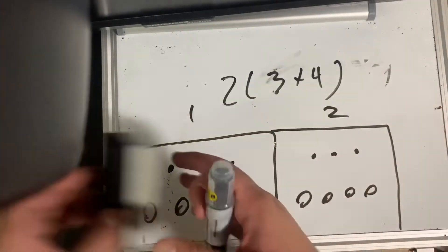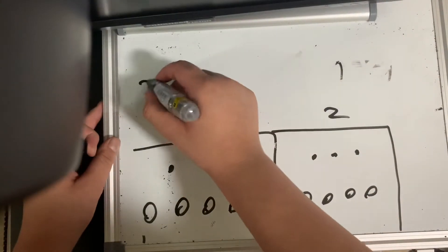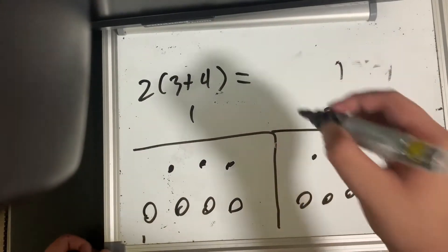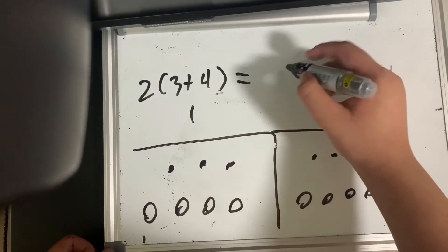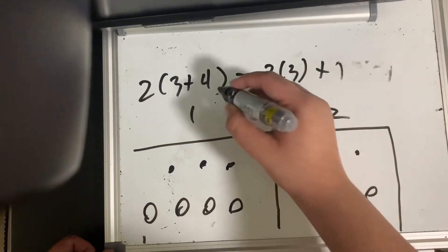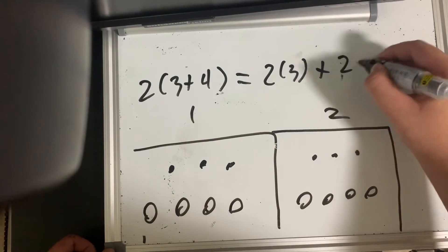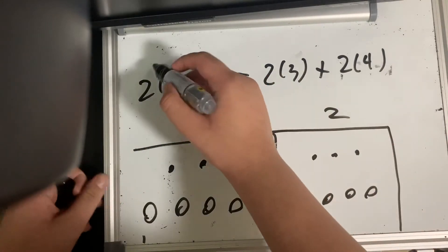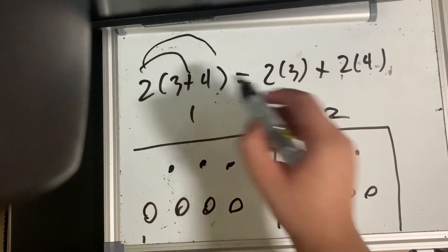So, we can write it like this, where when the entire group of 3 plus 4 multiplies by 2 like this, it's the same as the 3 subgroup multiplying by 2, so that's like this, and the 4 subgroup also multiplying by 2. So, it will look like this. Now, you can see that this is exactly the distributive property. 2 multiplies by 3 to make this, and 2 multiplies by 4 to make this.